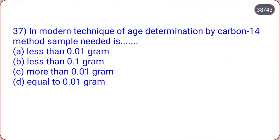In the modern technique of age determination by carbon dating method, the sample needed is dot-dot. Options are less than 0.01 gram, less than 0.1 gram, more than 0.01 gram, equal to 0.01 gram. Correct option: sample needed is less than 0.01 gram.